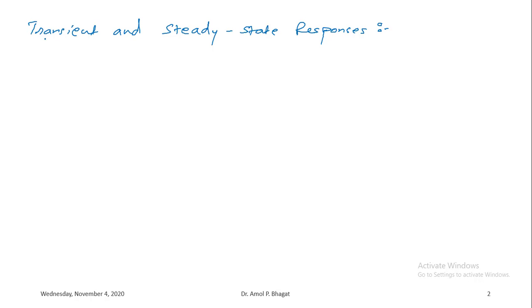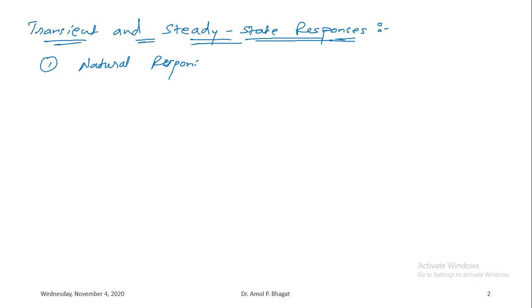The response of a system to a given input can be separated into two components. The first is the natural response, which we discussed when studying difference equations — it is also termed the zero input response. The second is the forced response, also termed the zero state response.